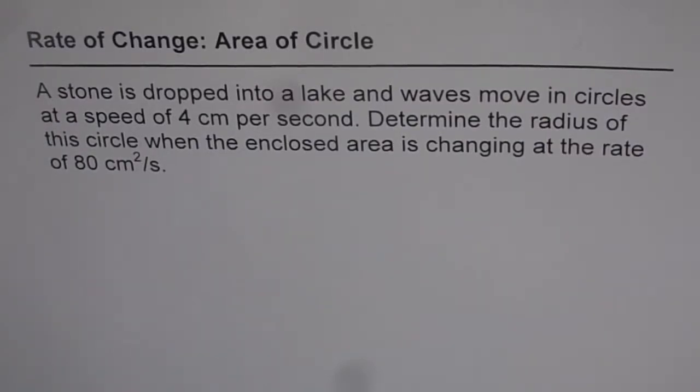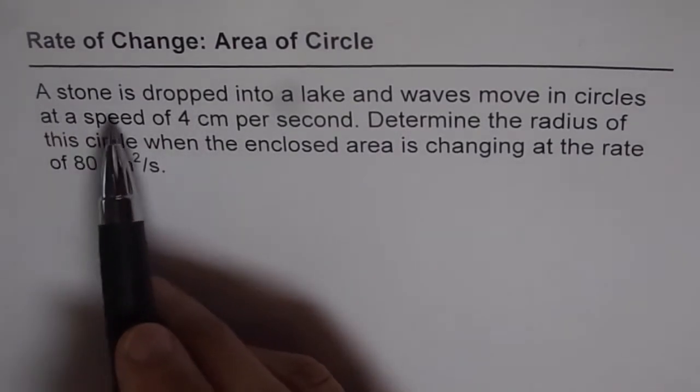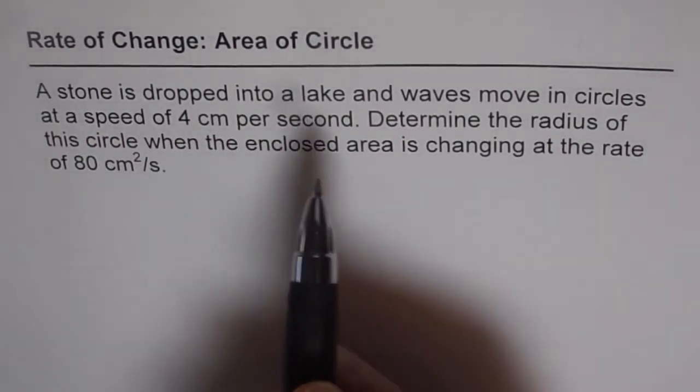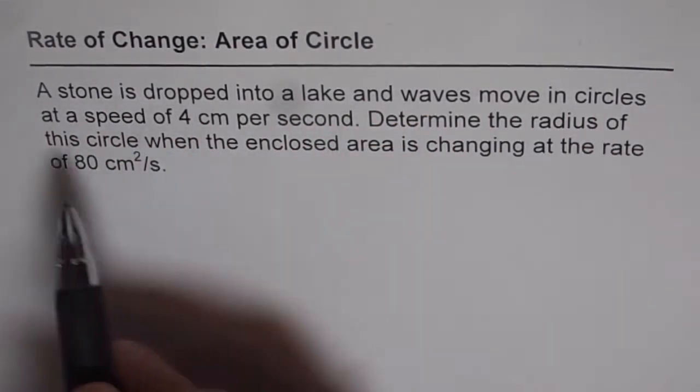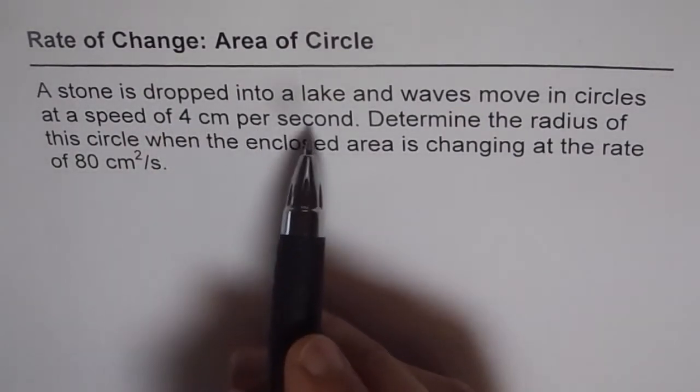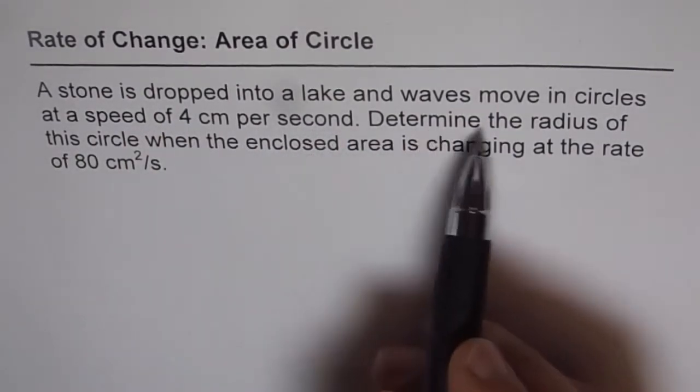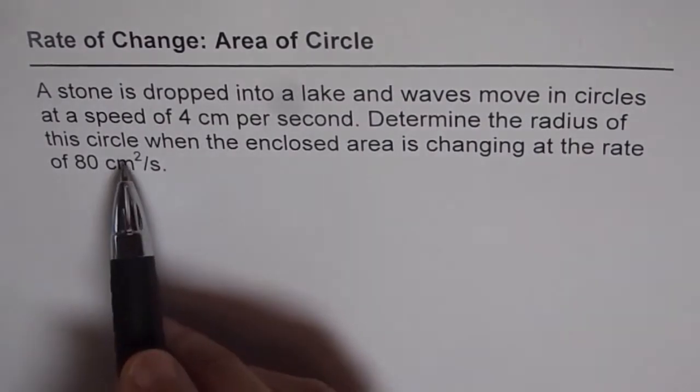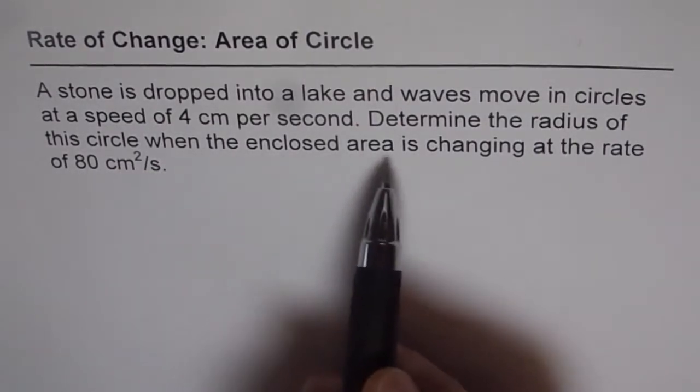Here is a related rate problem. When two things are related, their rate of change is also related. Based on that, we have a question here: a stone is dropped into a lake and the waves move in circles at a speed of 4 centimeters per second. Determine the radius of the circle when the enclosed area is changing at the rate of 80 centimeters square per second.